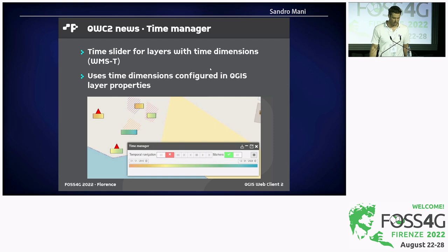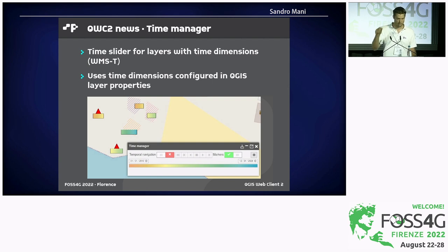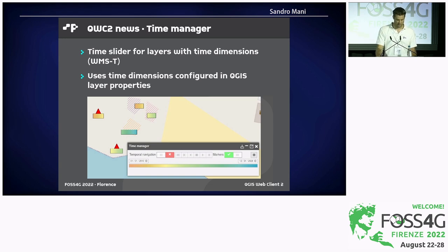There's a new plugin called the Time Manager. It connects to the WMS-T time dimension which you can configure in QGIS layer properties under QGIS server. There's a slider allowing you to define the time you want illustrated in the map, and it will use those time dimensions over QGIS server to pick out only the features visible at that time. An additional feature is small bars underneath the features that illustrate the time frame within which each feature is visible.